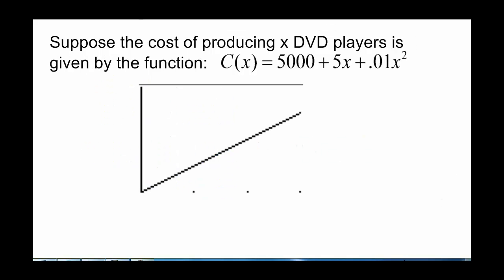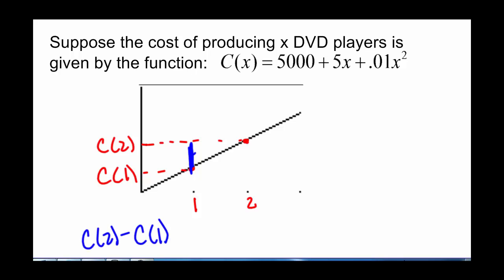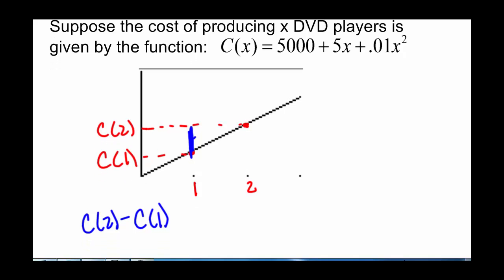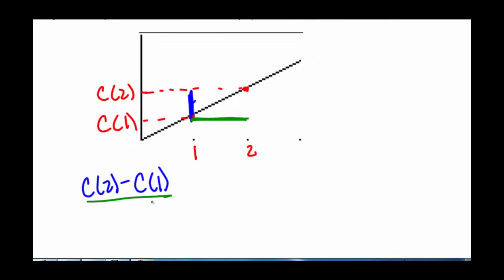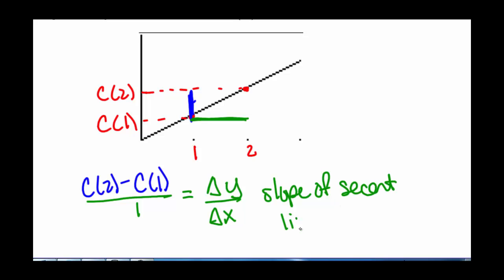If we look at this on a graph, here's the cost to produce one item and here's the cost to produce two items. The cost to produce that second item is this distance here — C(2) minus C(1). The distance along the x-axis between the two is 2 minus 1, which is just one unit. So the cost to produce that second item is the change in y over the change in x, which is the slope of the secant line between C(1) and C(2).